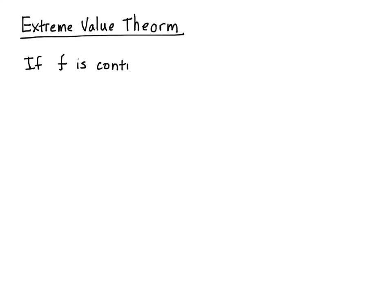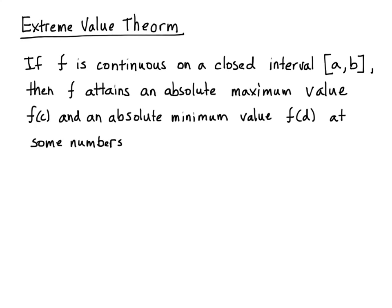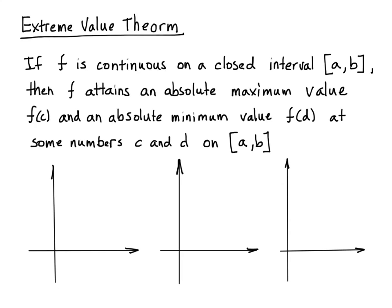Here's the extreme value theorem. The extreme value theorem: if we have a continuous function over a closed interval — meaning that a and b, the bounds of this interval, are included in the domain of this function — then we're going to say that this function attains its absolute maximum value and absolute minimum value at some numbers c and d on a and b. What that means is that when we have a function that's continuous on a closed interval, there is a minimum and maximum value. Unlike a line over all real numbers which has no absolute min or max, if we confine that to a certain line segment, there is a minimum and maximum.